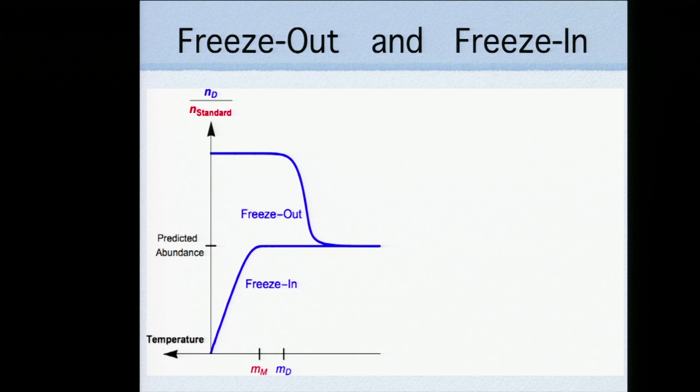So this is a totally different generic mechanism for making dark matter in the early universe. Here's freeze out and freeze in compared as a function of temperature. The freeze out, you start with a huge abundance and it drops off. The freeze in, you start with none, and it levels, it comes in and levels off.